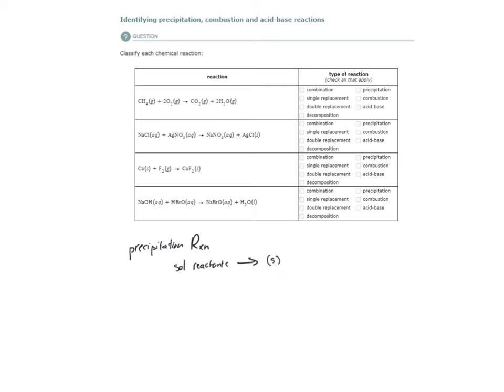For a combustion reaction, we have a molecular compound, something like methane for example, reacting with diatomic molecular oxygen. And in a combustion reaction, the combustion of a hydrocarbon, we always get two things, carbon dioxide and water.